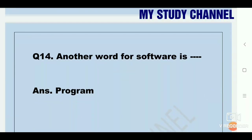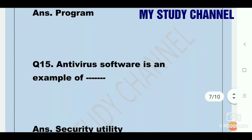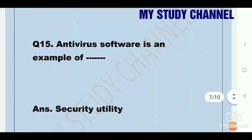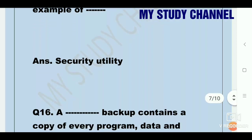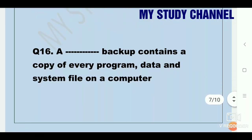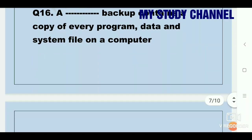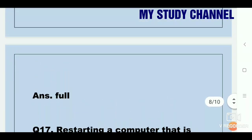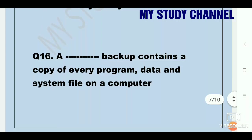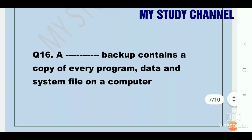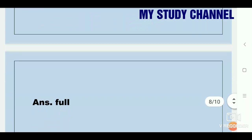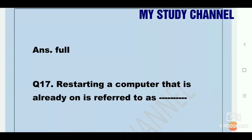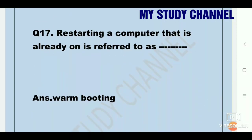Another word for software is program. Antivirus software is an example of security utility. A full backup contains a copy of every program, data, and system file on a computer — so full is the right answer.